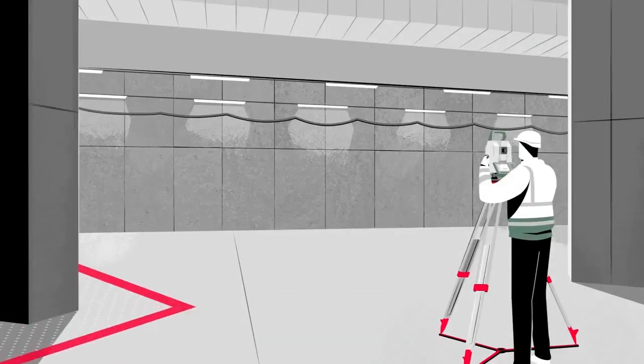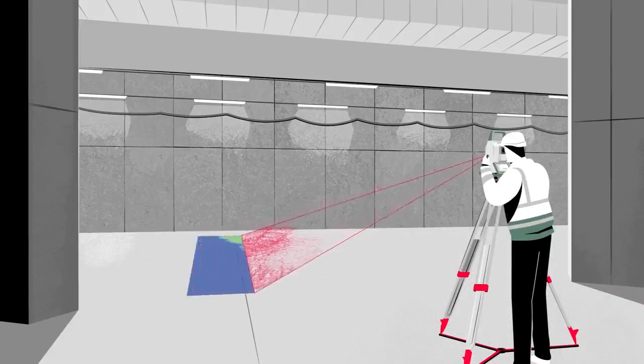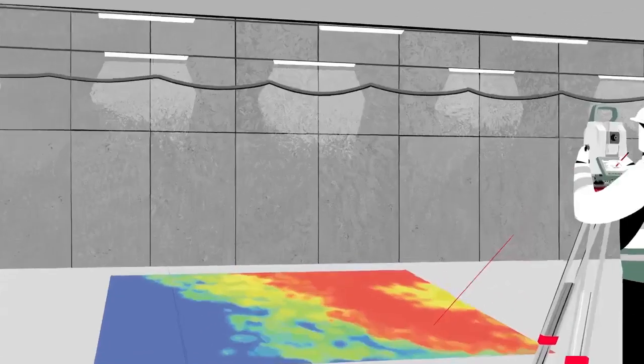For example, checking the flatness of a concrete floor has never been this easy. Just create a 3D visualization of measurements compared to a reference surface and immediately point to the problem areas using the red laser of the Leica Nova MS-60 multi-station.